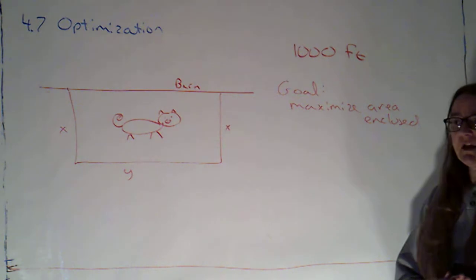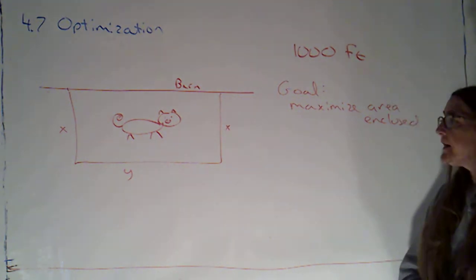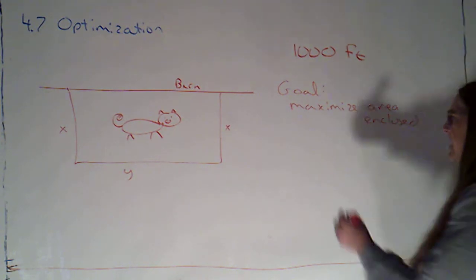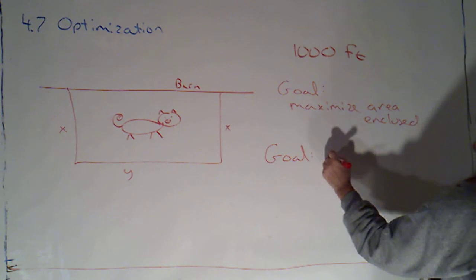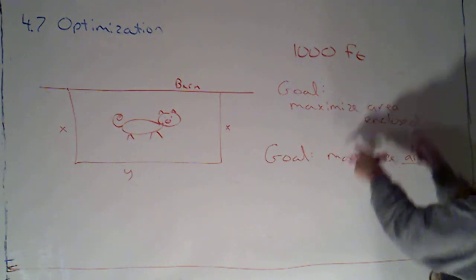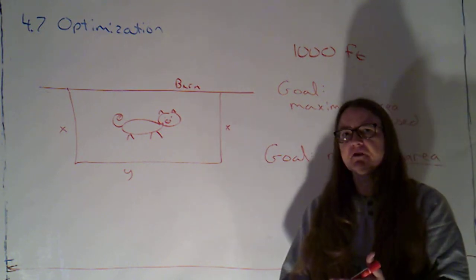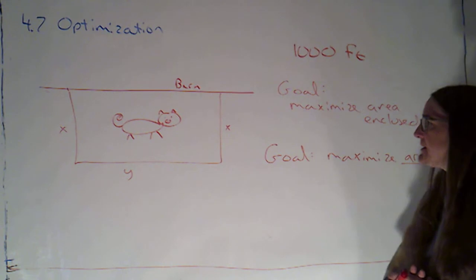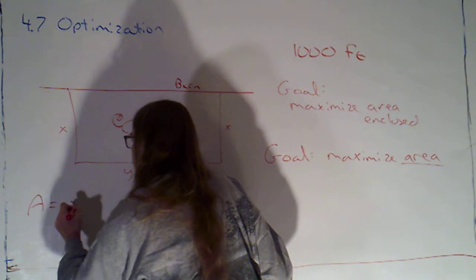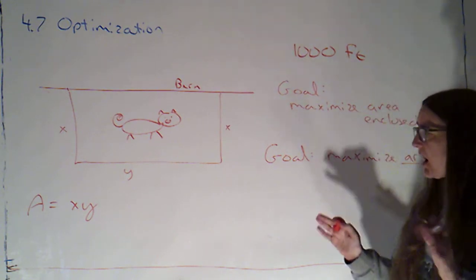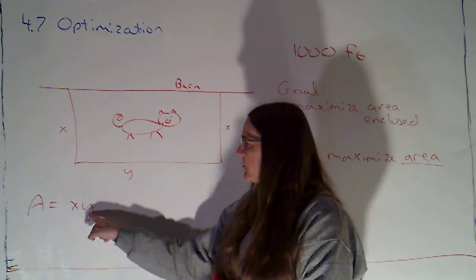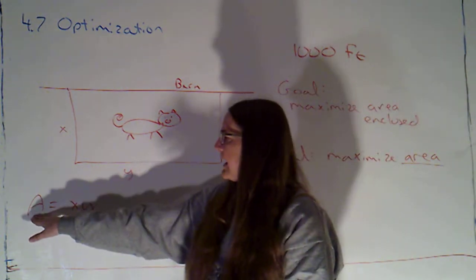When we have a situation like this, I want to identify two things. First of all, what is the thing I am trying to optimize? Sometimes we're going to be trying to maximize something, sometimes minimize it. But I always want to say, what is my goal? I actually just stated that. My goal is to maximize the area. If this is the area of a rectangle, I know that the area of a rectangle is just x times y.